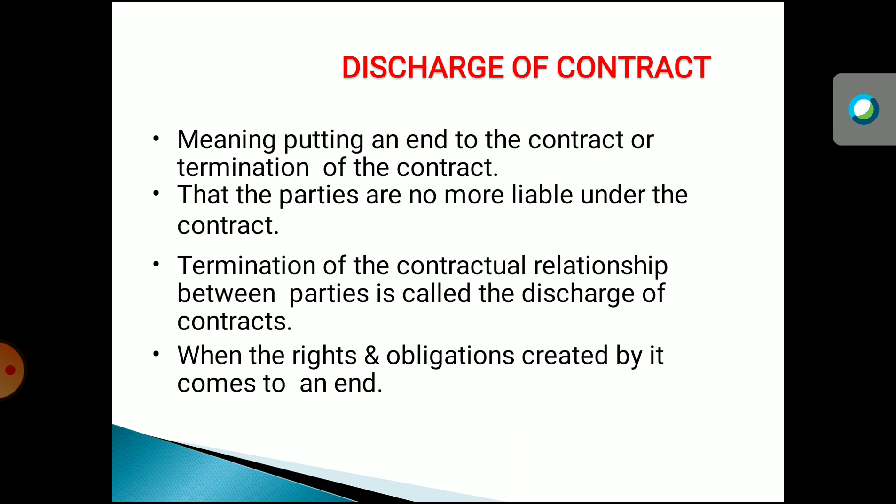In discharge of a contract, it is the termination of the contractual relationship between the parties. It is called discharge of a contract when the rights and obligations created by it come to an end — both rights and obligations will come to an end. Such a situation is called discharge of a contract.